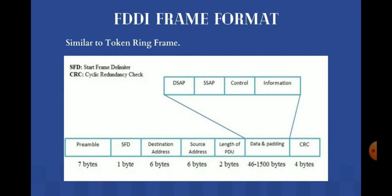The FDDI frame format is similar to the token ring frame. Its fields include: Preamble (PA), Start Frame Delimiter (SFD), Destination Address (DA), Source Address (SA), Length or PDU (Protocol Data Unit) with variable-length data and padding, and CRC (Cyclic Redundancy Check).